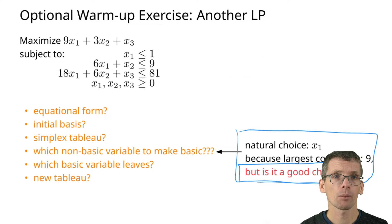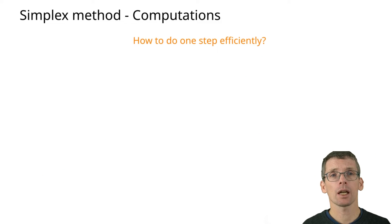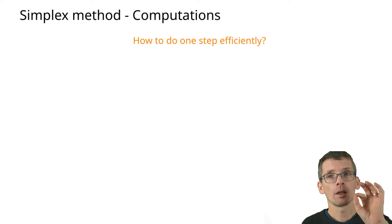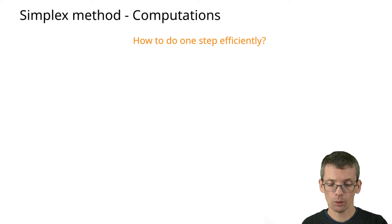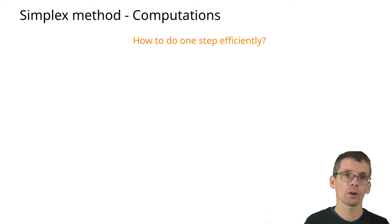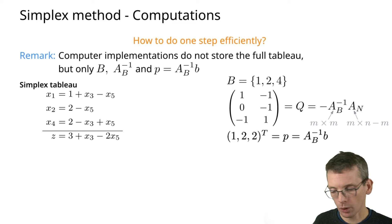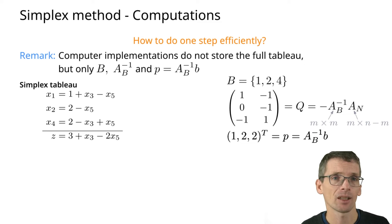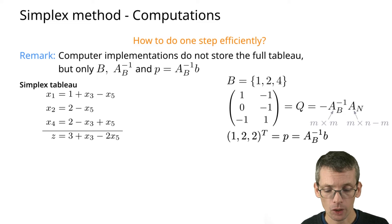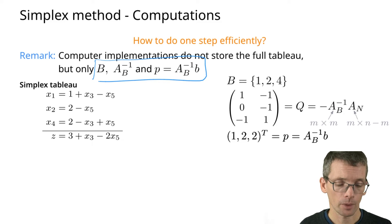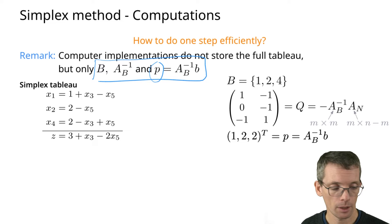Let's start talking about efficiency. First I want to take a look at one step of the algorithm — going from one tableau to the next, a so-called pivot step. In terms of computer implementation, you would not actually compute the full tableaus, but maintain just these quantities: B, A, B inverse, and then A B inverse B, which is p.